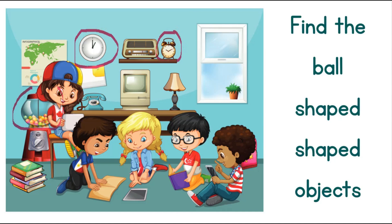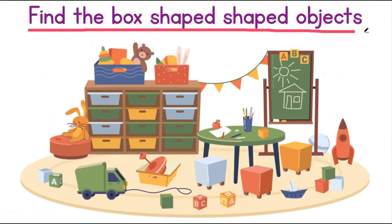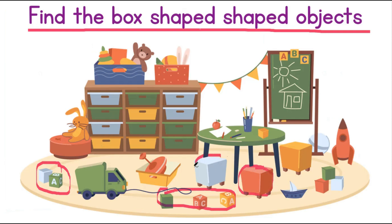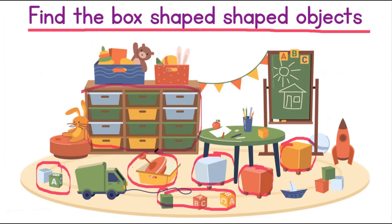Gift box. Ball-shaped bubblegum machine. Can you see any more ball-shaped objects? Great job! Let's find box-shaped objects. There are so many different box-shaped objects. There are blocks on the floor. There is a box stool, another box stool, and one more box stool. Can you see all the different boxes on the shelf? And here is a box on the floor.